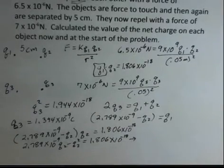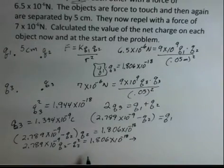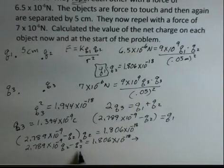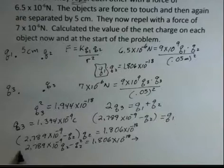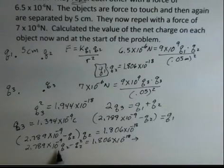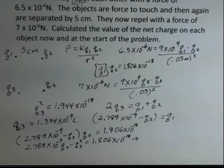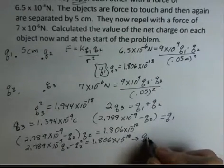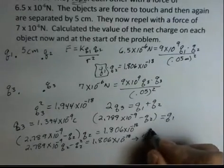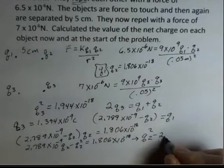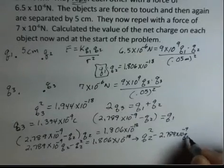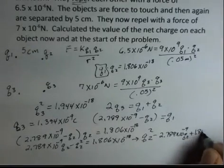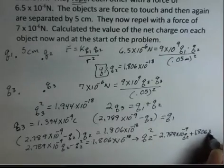Minus Q2 squared equals 1.806 times 10 to the minus 18. And now, I want to convert this quadratic equation in a more standard form. I prefer to have the coefficient in front of the squared variable as a positive. So, I'm going to add Q2 squared to both sides. I'm going to subtract 2.789 times 10 to the minus 9 Q2 from both sides. And that will generate quadratic in a little bit more standard form. Q2 squared minus 2.789 times 10 to the minus 9 Q2 plus 1.806 times 10 to the minus 18.